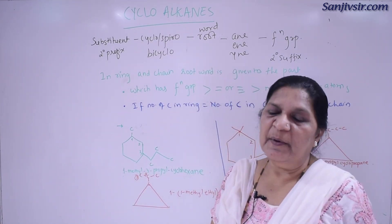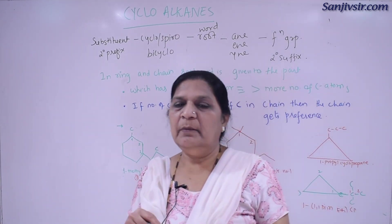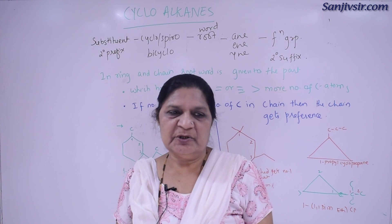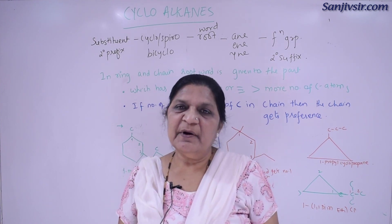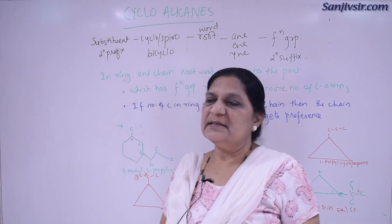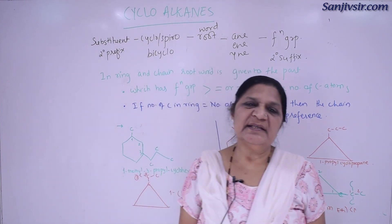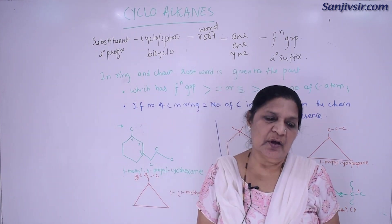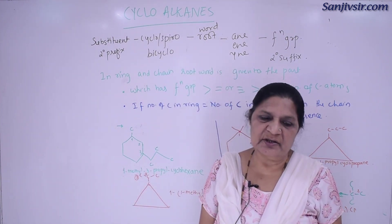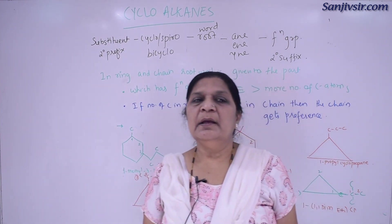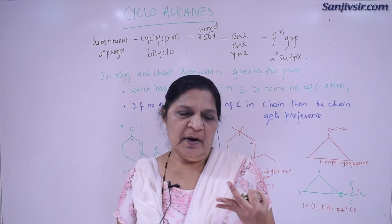We learned how to name complex substituents. Now the last part of this topic is cycloalkanes. What do you understand by cyclic structure? You have studied cyclic structure. Cyclic structure means a minimum of three carbon atoms.